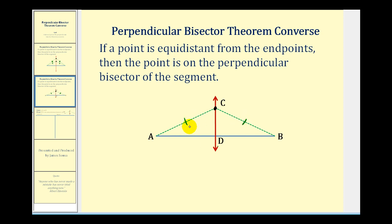Therefore, we know the base angles of the triangle would be congruent, so angle A would be congruent to angle B. Next, we'll define D as the midpoint of segment AB, and therefore segment AD would be congruent to segment BD. So by side-angle-side, these two triangles would be congruent.